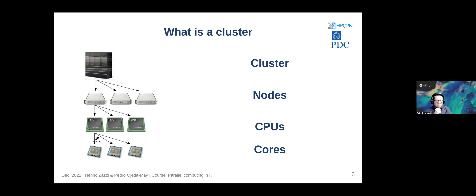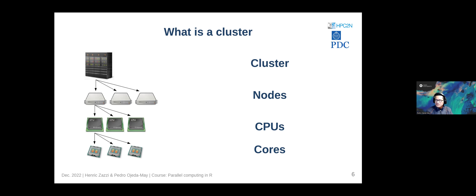That is why you can now run multiple applications like Word and PowerPoint simultaneously without delay, unlike in the 1990s. These CPUs are also integrated into a larger piece of hardware called a node. Nodes are organized into piles that form a rack. The collection of racks is called a cluster — which is what we have here at Kebnekaise and also at the PDC machine called Dardel.